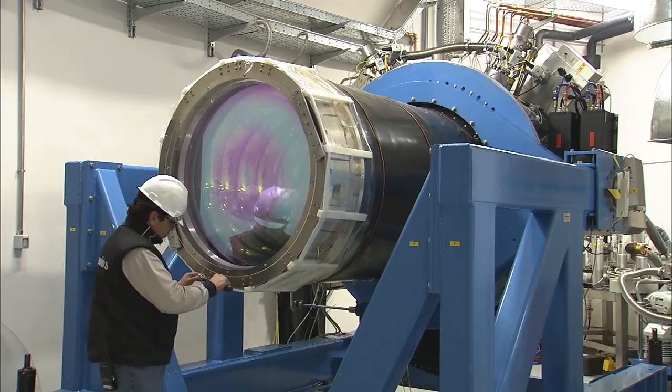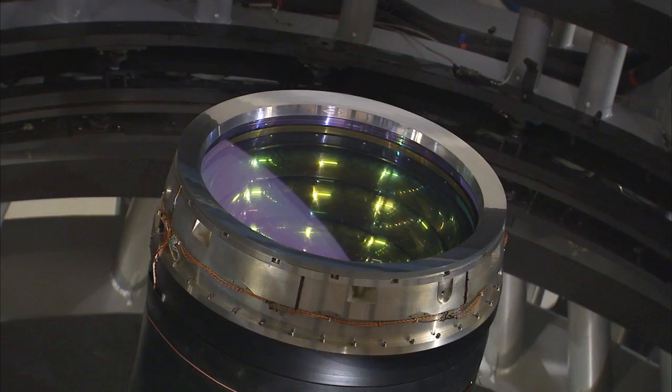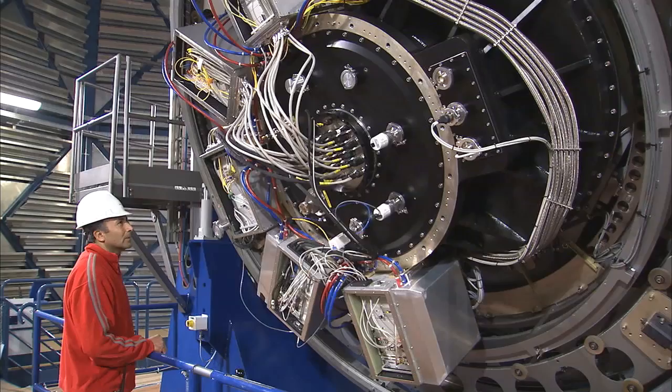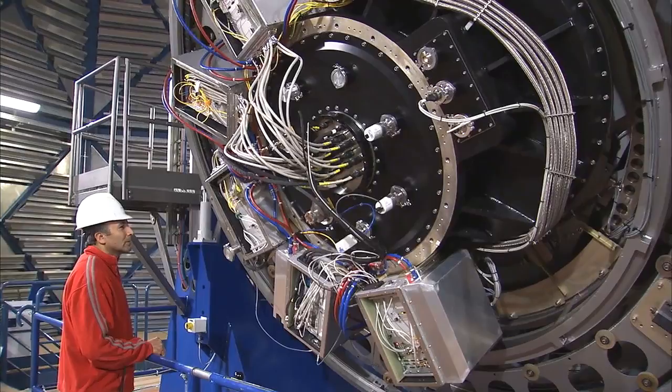At the heart of VISTA is a three-ton camera containing 16 special detectors sensitive to infrared light with a combined total of 67 megapixels. This huge instrument provides the widest sky coverage of any astronomical near-infrared camera.